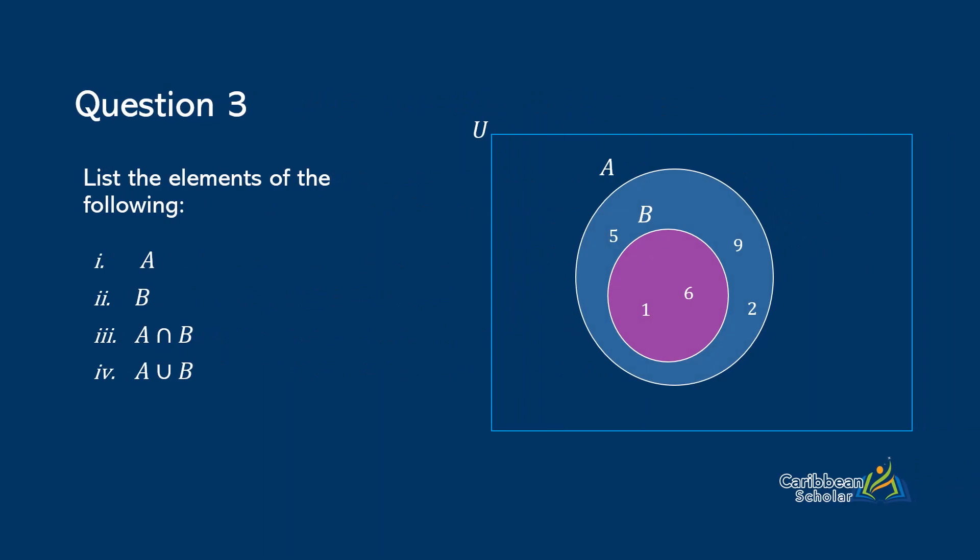Question three. So now you can see that we have sort of a subset situation, and I'd encourage you to pause the video and give this one a try. Okay, so let's go through it together. Part one asks us to list the elements of A. So we have one and six, these are the numbers that are assigned B, and then we have five, nine and two.